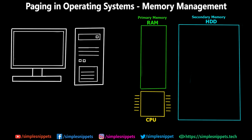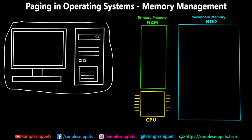Before we get into the paging memory management scheme, let's understand what exactly paging is and what it helps us achieve. On the screen you can see a typical desktop scenario. We are considering three components: primary memory known as RAM (random access memory), secondary memory which is the hard disk drive, and our CPU which processes and executes instructions.